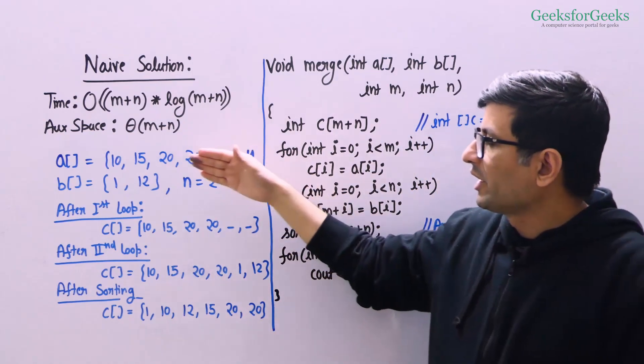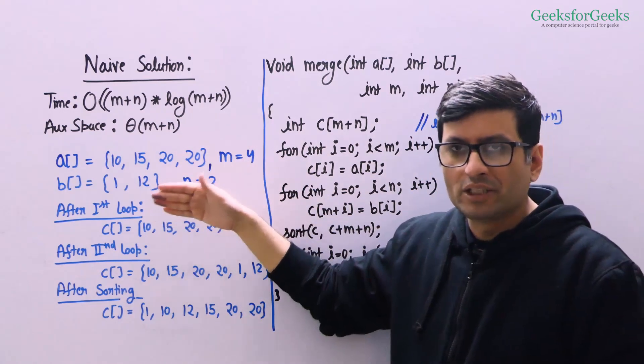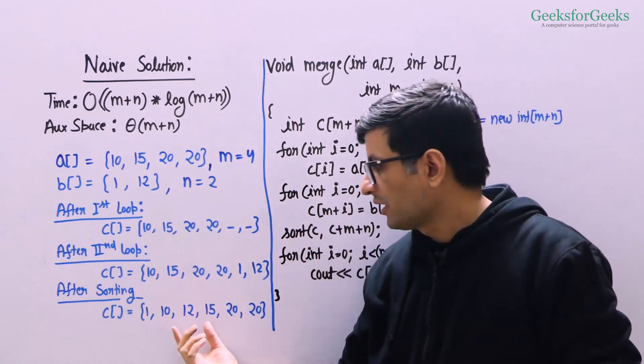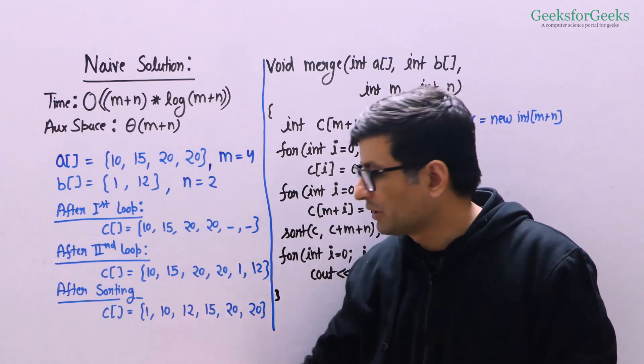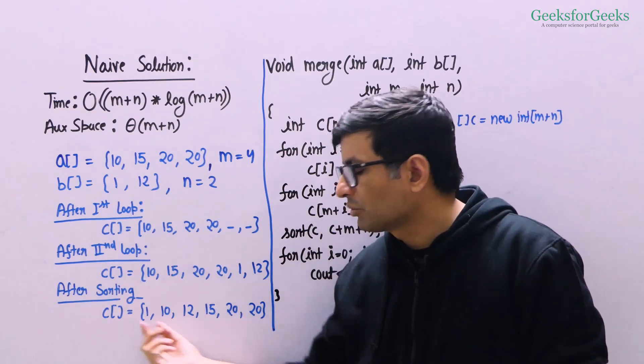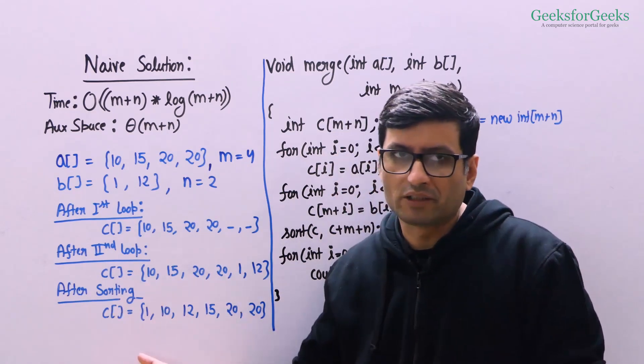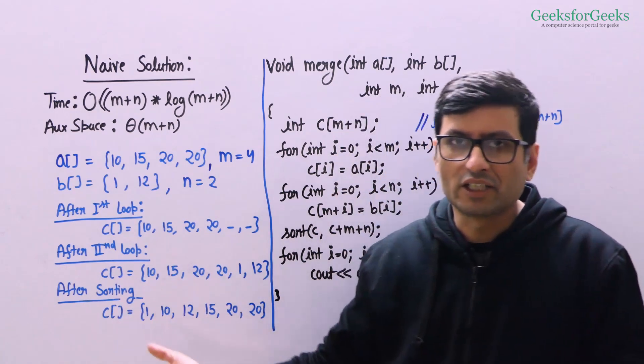We now have all the elements of A and B in sorted order in array C, which is exactly what we wanted. So we can simply traverse through array C and print it to get the output.